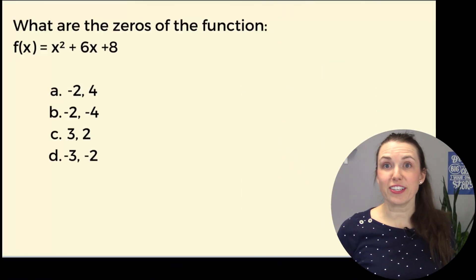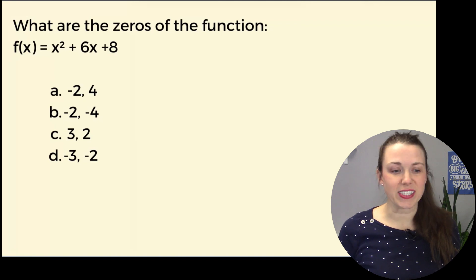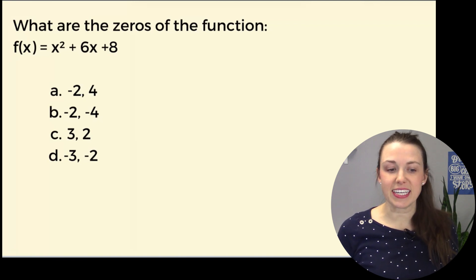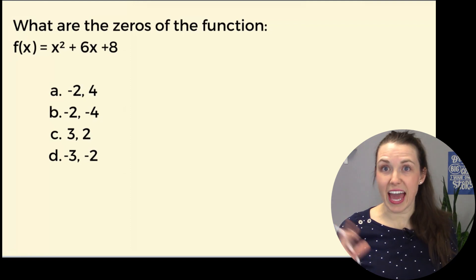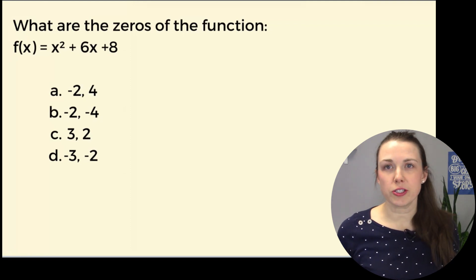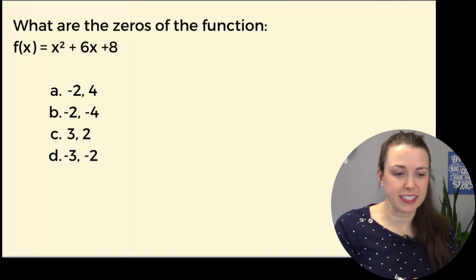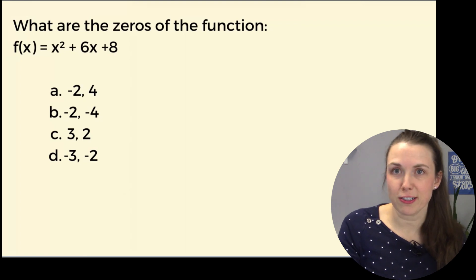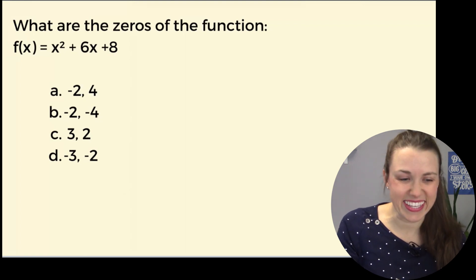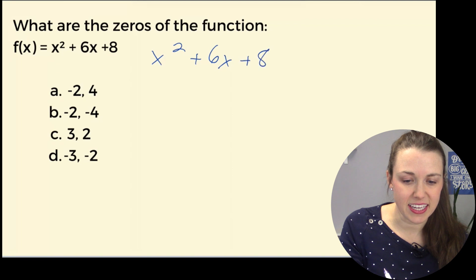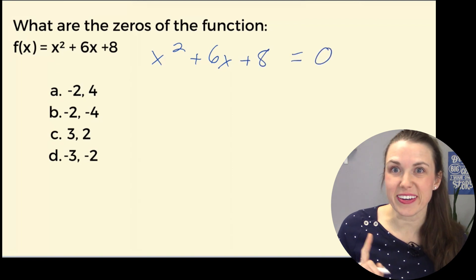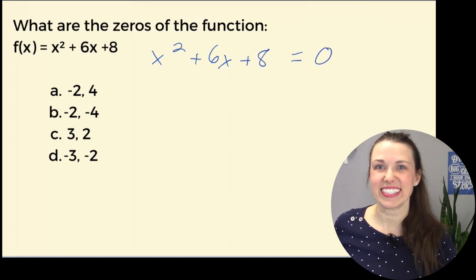What are the zeros of the function? f(x) = x² + 6x + 8. Whenever you see something that says f of x, that just means y, or you can even put a zero. So I'm going to switch this around just a little bit: x² + 6x + 8 = 0, because we're going to go back to that zero at the end.